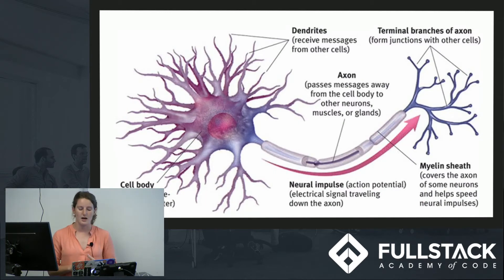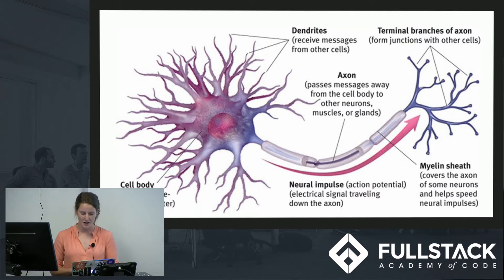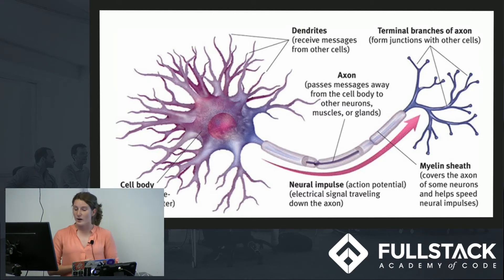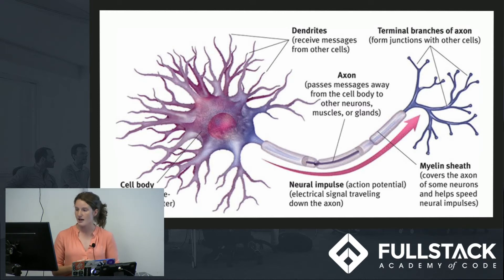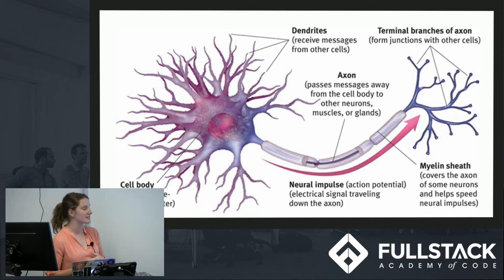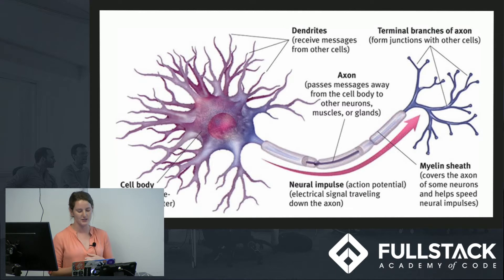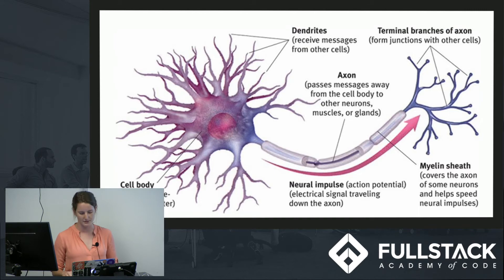Neural networks are a paradigm inspired by the idea that you could build an intelligent machine similar to how the brain works. So let's start by looking at a neuron, the funny-looking cell in your brain. On one end, the neuron has a bunch of dendrites that receive signals from other neurons, and on the other end it has an axon. At the end of that axon are synaptic terminals that connect to the dendrites of other neurons. When a neuron receives a sufficient number of signals from other neurons within a few milliseconds, it fires its own signal.